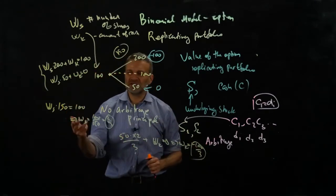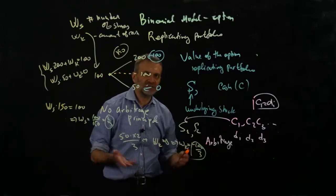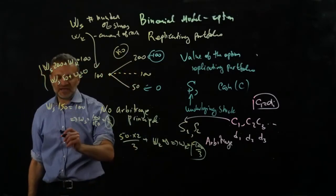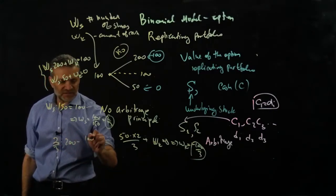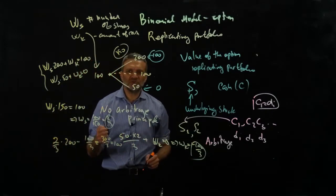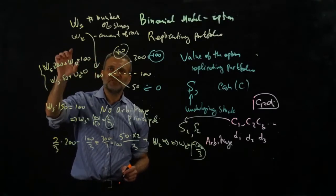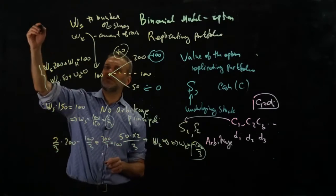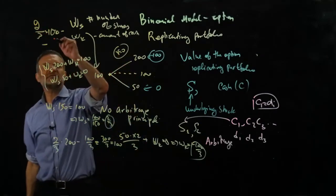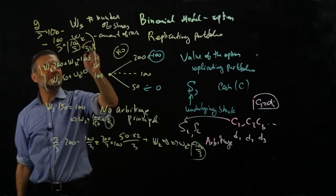To replicate this portfolio you need to buy two-thirds of the stock and borrow 100/3 — about $33.33 — in cash. Let's verify it also works for the up state: (2/3) × 200 − 100/3 = 400/3 − 100/3 = 300/3 = 100. Correct. Now, the price of this replicating portfolio today is (2/3) × 100 − 100/3 = 200/3 − 100/3 = 100/3. So you would pay $33.33 for this option — that is your option value.